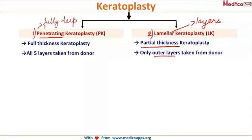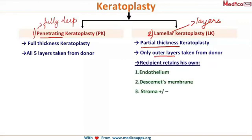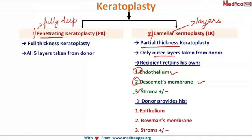The recipient — that is the person receiving the corneal transplant — retains their endothelium, Descemet's membrane, and may or may not retain the stroma depending on the indication. The donor provides the outermost layers: the epithelium, Bowman's membrane, and plus or minus the stroma, depending on what layers are needed in the recipient.